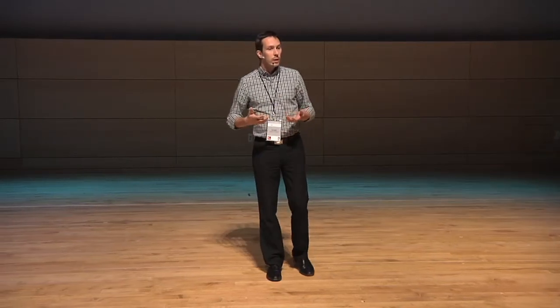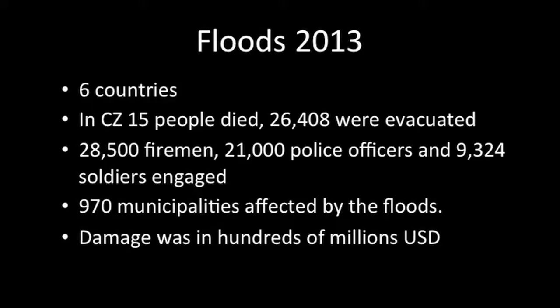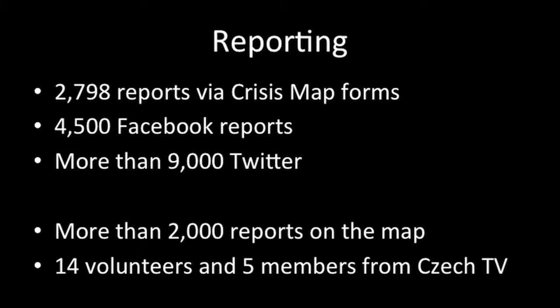When the map was ready, we were basically waiting for something to happen. One year later, another major flood hit the Czech Republic and the center of Europe — about 26,000 people had to be evacuated and about 50,000 people were involved in the situation. It basically hit about half of the country. In those days, we had about 10,000 reports from different sources. Out of these reports, 2,000 of them made it to the final map, and this was done by 14 volunteers and 5 employees of Czech television.